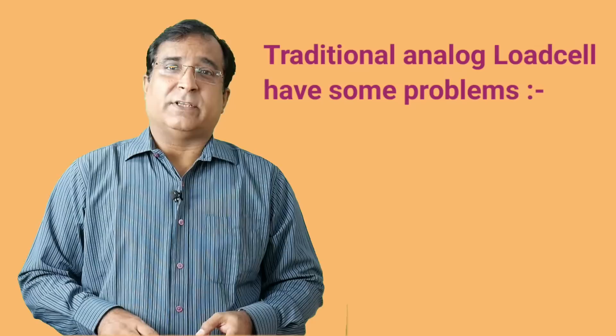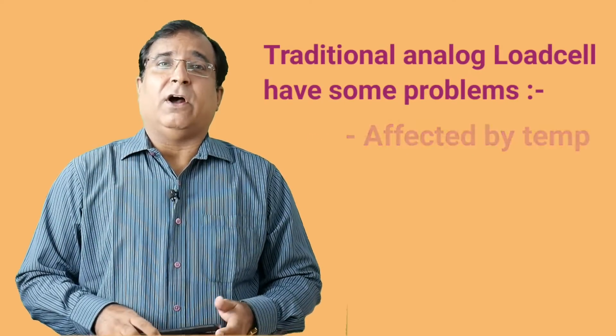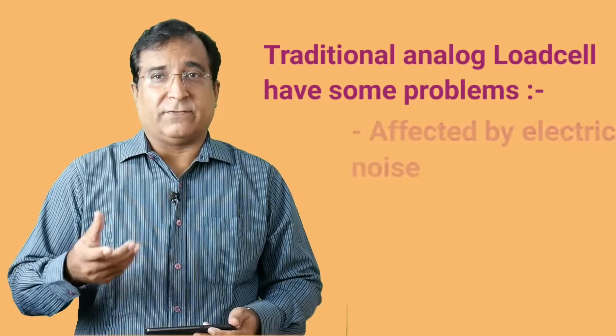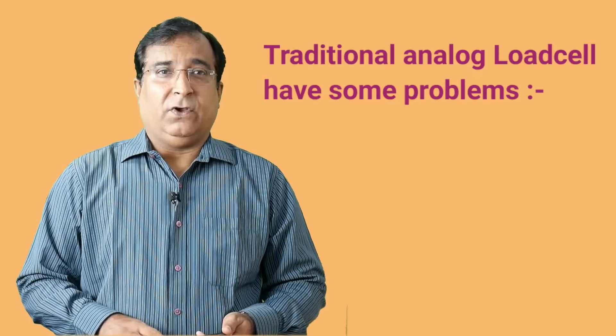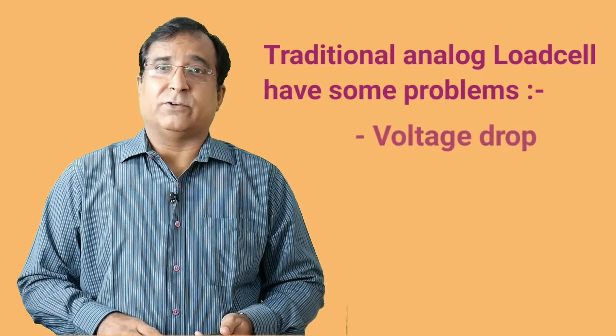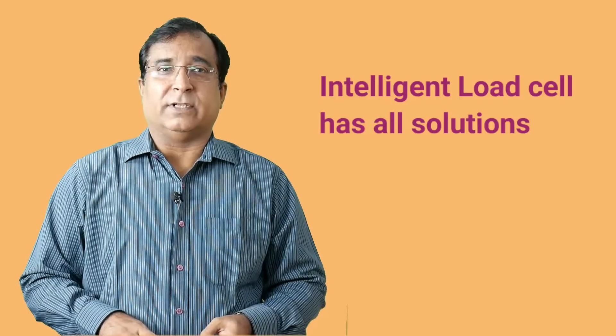In the latest development, intelligent digital load cell is replacing older generation load cell. The analog load cell has some issues like signal is affected by ambient temperature variation. Also electrical noise or interference causes false millivolt to superimpose on the cable line. It may corrupt the reading. A 4 wire load cell has inherent voltage drop over cable line. Due to these reasons signal accuracy gets compromised. All these issues have been addressed in intelligent load cell.